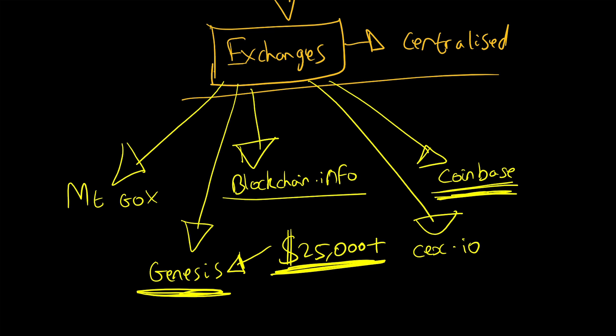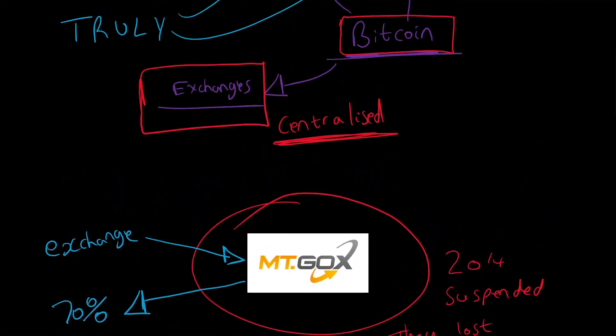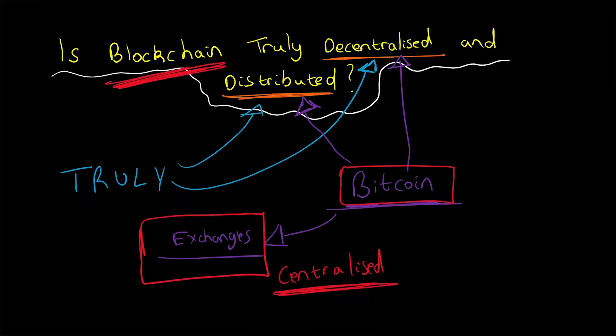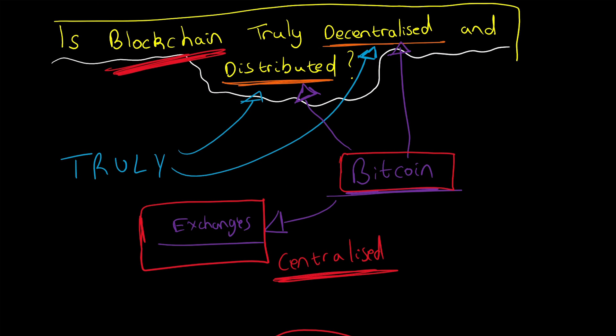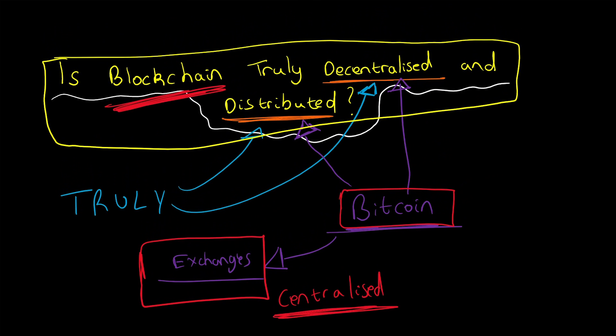Coinbase, which I said is one of the most popular ones, has, if you look at the terms and conditions and their privacy policy, similarities to PayPal. And that's definitely not decentralized and distributed, that's centralized. So that is what I meant by blockchain having elements of centralized features within blockchain, more in the implementations.